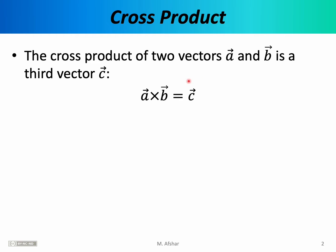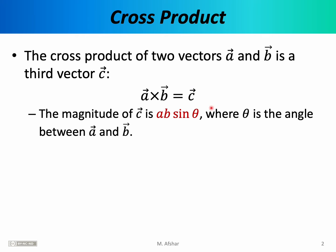We want to know what this new vector is. Like all vectors, it's going to have a magnitude and an orientation. The magnitude of this new vector is AB sine theta. To figure out the magnitude of the cross product, you take the magnitude of A, take the magnitude of B, multiply those by the sine of the angle between A and B, and that gives you the magnitude of vector C.